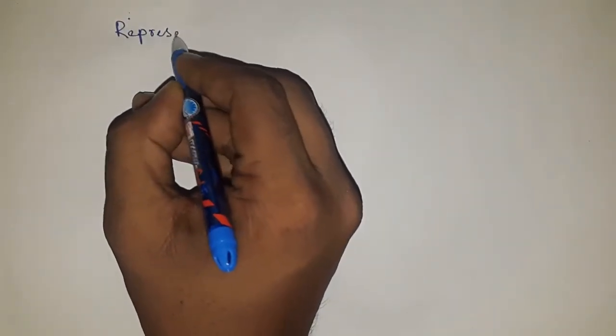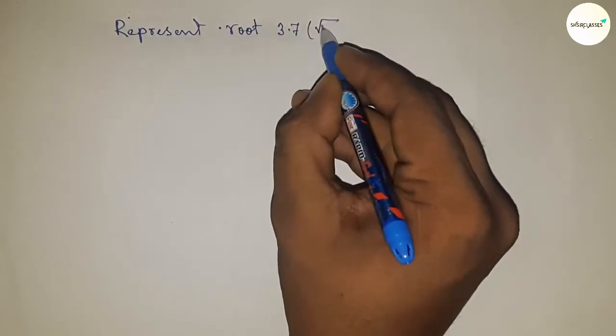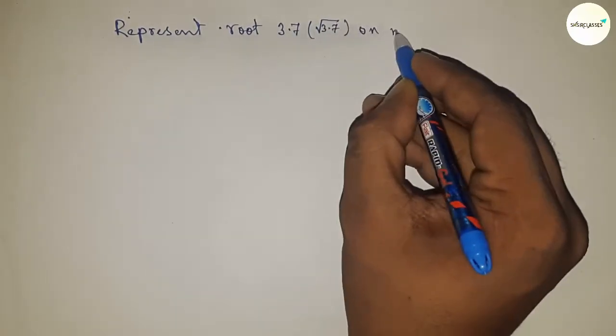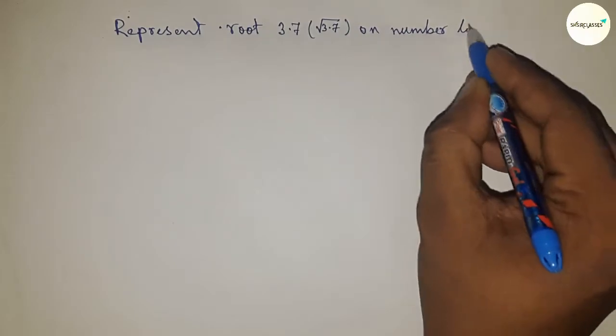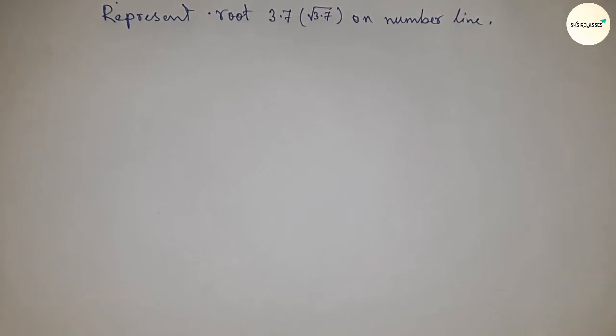Hi everyone, welcome to accessory classes. Today talking about the representation of root 3.7 on number line. Before starting the video, please subscribe channel and press the bell icon.